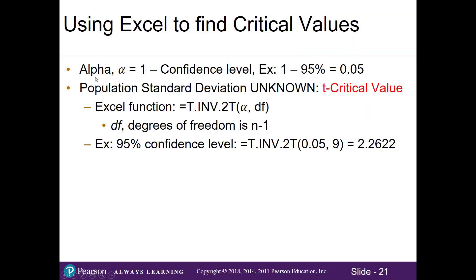When using Excel, we have to remember that alpha, our Greek letter A, is just 1 minus our confidence level. So for a 95% confidence level, we do 1 minus 0.95, giving us an alpha of 0.05. Since we don't know the population standard deviation, we're finding a t critical value. The formula is equals T.INV.2T, and you'll enter in your alpha and your degrees of freedom, where degrees of freedom is your sample size minus 1. For a 95% confidence level with 9 degrees of freedom, we get 2.2622.